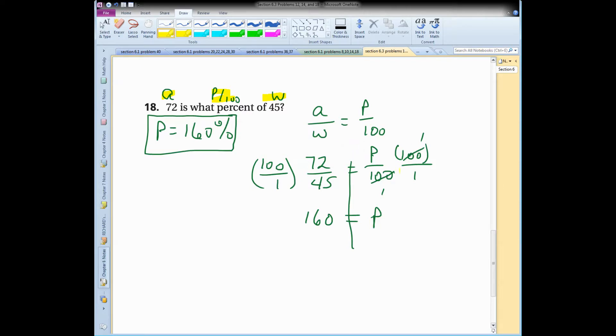This time, I just use the multiplication property of equality so that I could cancel that denominator with the numerator. Of course, I have to multiply that side by 100. Crank through my calculator, and I get 160, which, remember, that's P, and P is a percent.